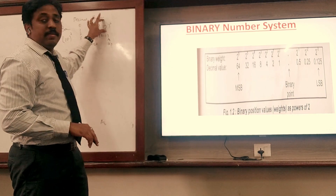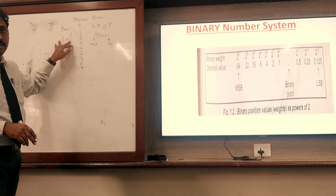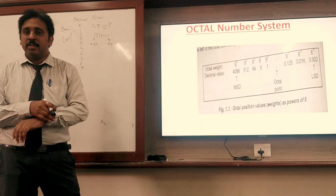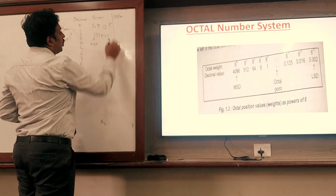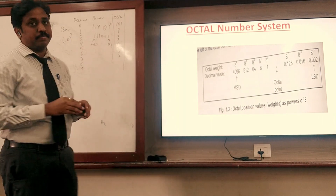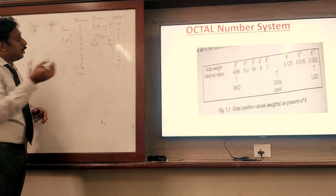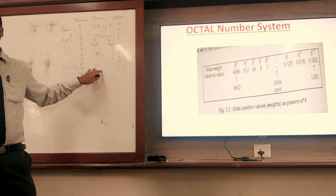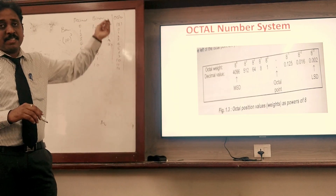In binary, the rightmost digit is called LSB — Least Significant Bit — because in binary you deal with bits, not digits. One bit is either 0 or 1. For example, 1110.11 — the rightmost is LSB and the leftmost is MSB, Most Significant Bit. Octal has base 8 with eight numbers: 0, 1, 2, 3, 4, 5, 6, 7. Hence it is an octal number system. Left side powers are positive, right side powers are negative. The right digit is LSD and the left digit is MSD.